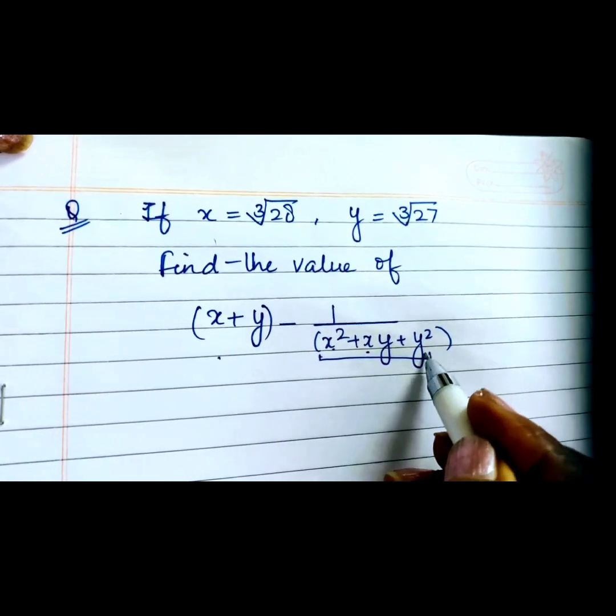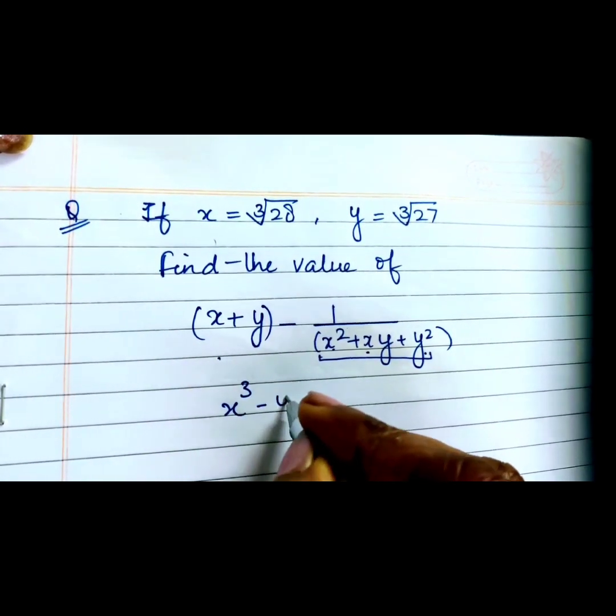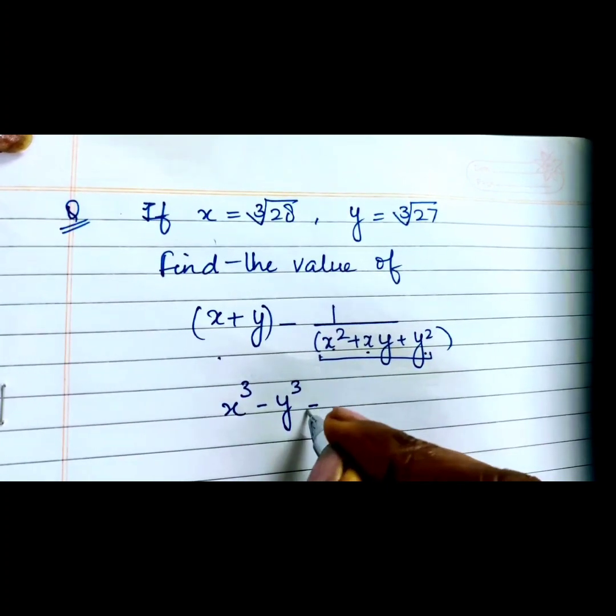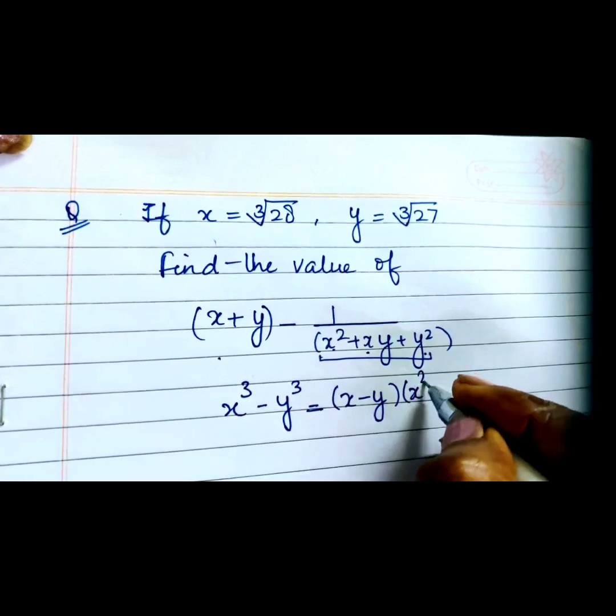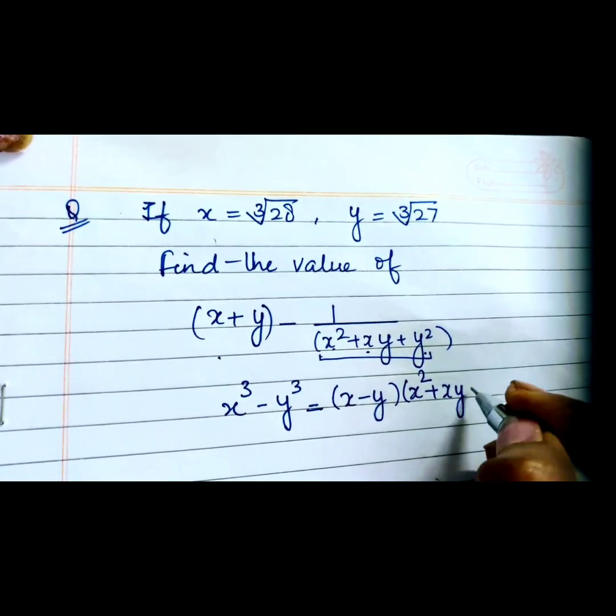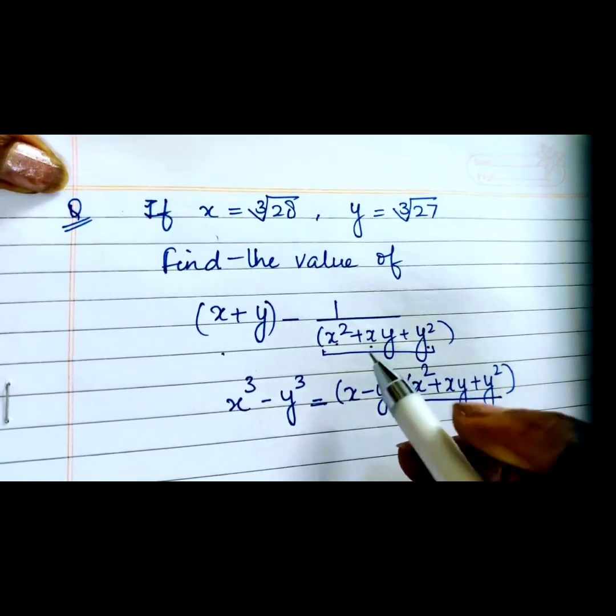it is x² + xy + y². We know the formula x³ - y³ = (x - y)(x² + xy + y²). So this one factor is given to us in the question, and the second factor is missing. What we want is to convert this into